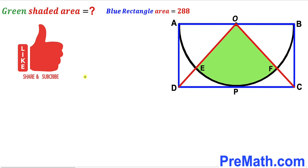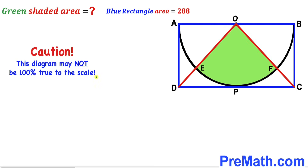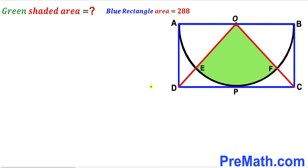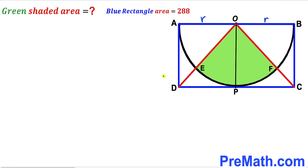Please don't forget to give a thumbs up and subscribe, and keep in mind that this figure may not be 100% true to scale. For our very first step, we can see that AO is the radius of this semicircle, and likewise OB is the semicircle radius as well. If we label this as lowercase r, then this radius is also lowercase r.